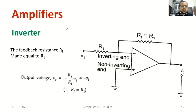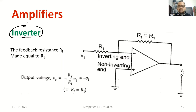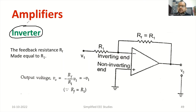I am going to ask one question: how does an operational amplifier act as an inverter? What is the purpose of an inverter? When you apply one input voltage, you will get a phase shift of 180 degrees at the output. So input and output will be 180 degrees out of phase. That is the purpose of an inverter. Let us discuss how the op-amp acts as an inverter.